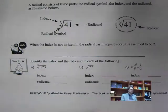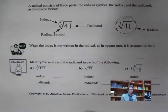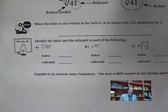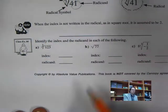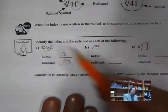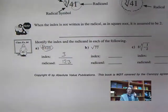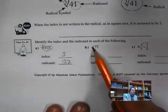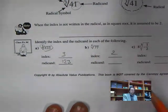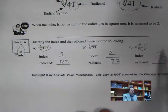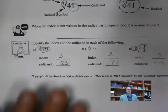Here are some definitions. The whole expression is called a radical. The little number is the index, and the number inside is the radicand. The index tells you how many pairs, triplets, or quadruplets you need. If there's no index number shown, there's an imaginary 2. So for the radical of 77, the index is 2 and the radicand is 77.